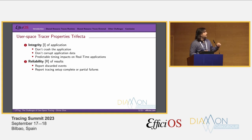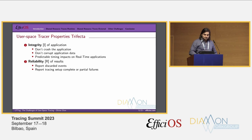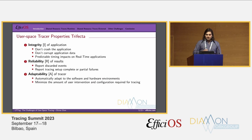Then comes the reliability of results, denoted as R. For example, if you discard an event as a tracer, you should report it to the user so they don't think no event was missed. Another example is reporting tracing setup complete or partial failure, so the user understands what's happening and the tracer is reliable. The third property is adaptability, denoted as A: automatically adapt to the software and hardware environment and minimize user intervention to configure the tracer — auto-detection of things.